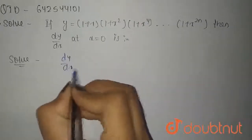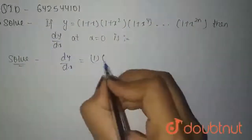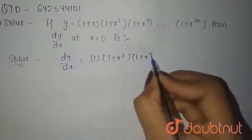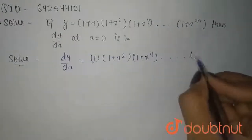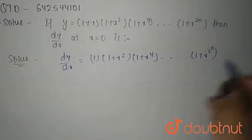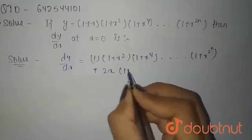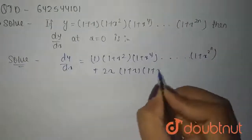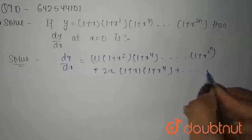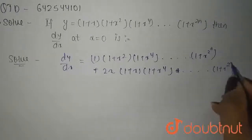So dy by dx — the differentiation of (1 plus x) is 1, multiplied by (1 plus x squared), (1 plus x to the power 4), and up to (1 plus x to the power 2^n). Plus: the differentiation of (1 plus x squared) is 2x, multiplied by (1 plus x), (1 plus x to the power 4), up to (1 plus x to the power 2^n).